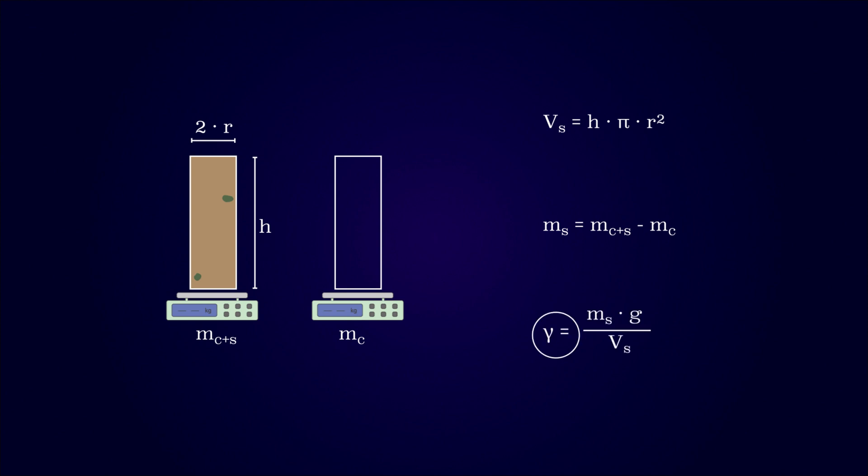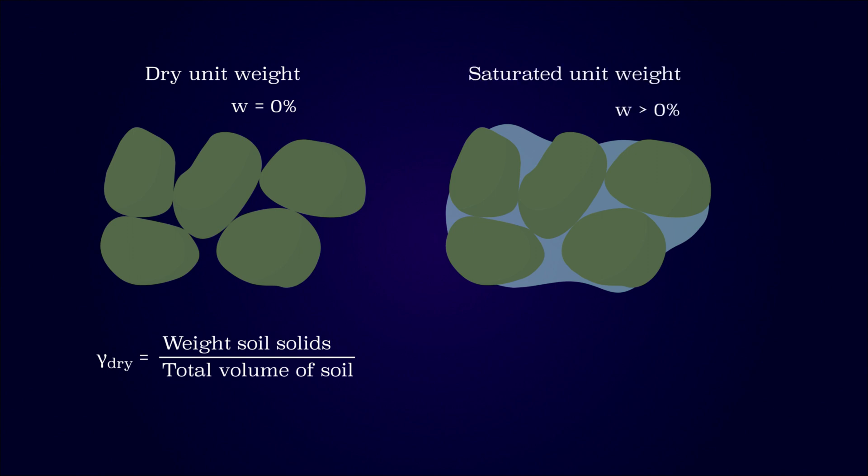But does the bulk unit weight correspond to the dry or saturated unit weight? This depends on the saturation of the specimen and the soil properties. The dry unit weight corresponds to soil without water and is defined as the weight of solids divided by the total volume of soil. The saturated unit weight corresponds to fully or partly saturated soil and is defined as the weight of solids and water divided by the total volume of soil. The water content can be determined from the intact soil sample.